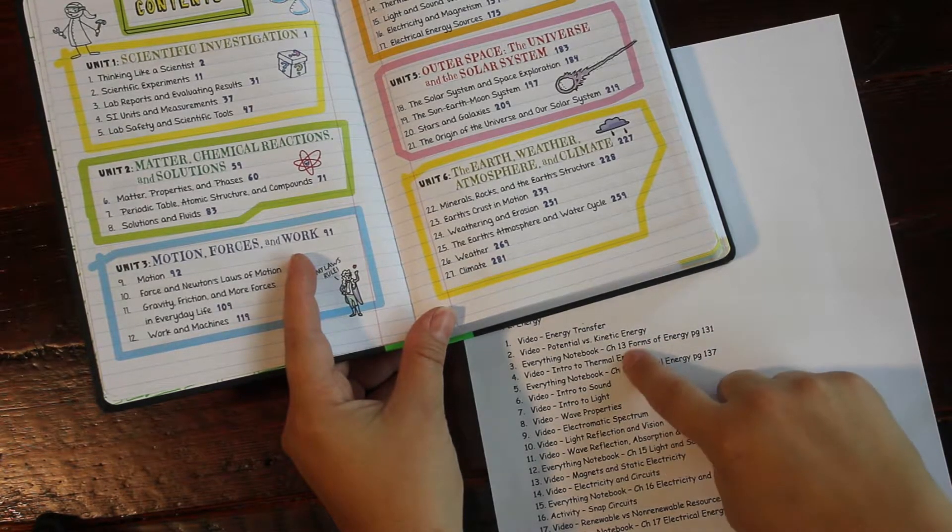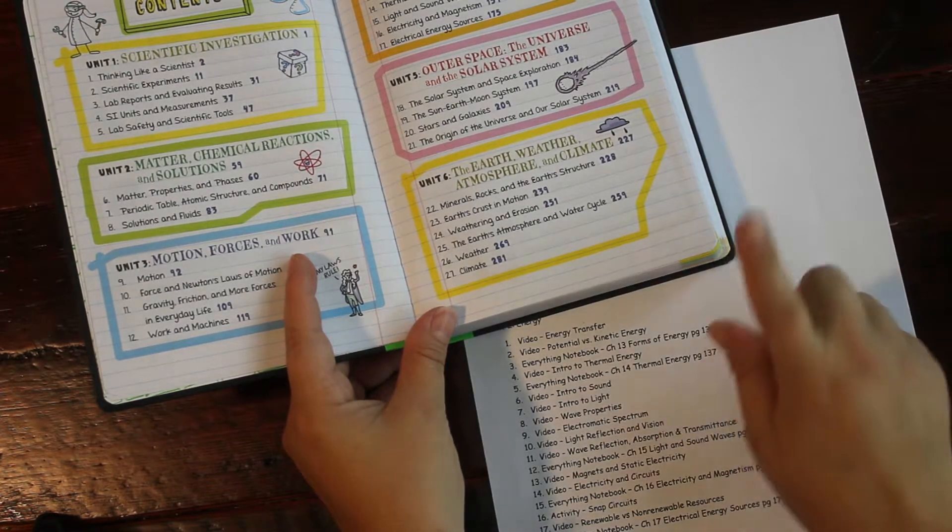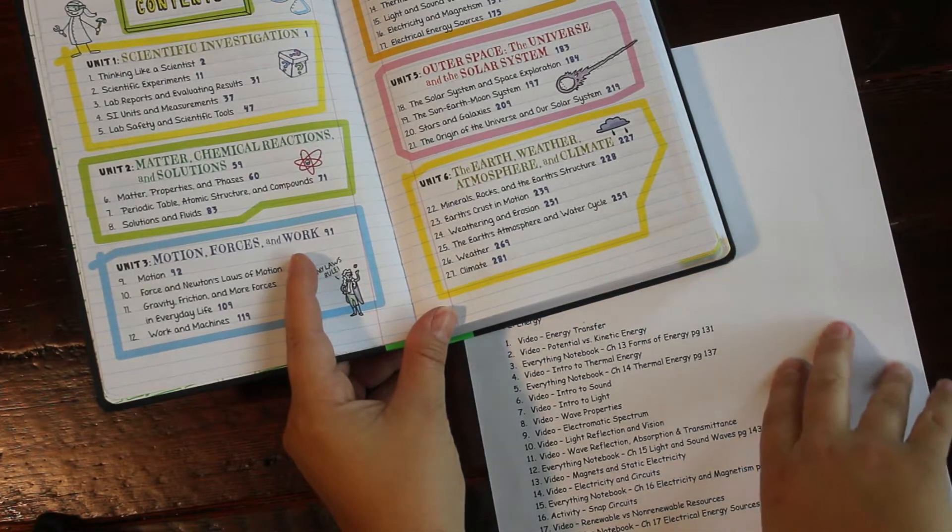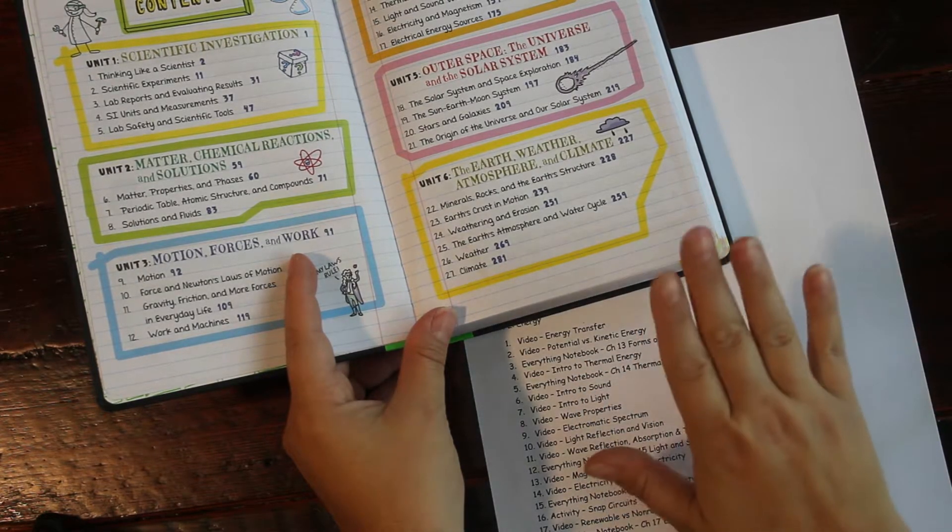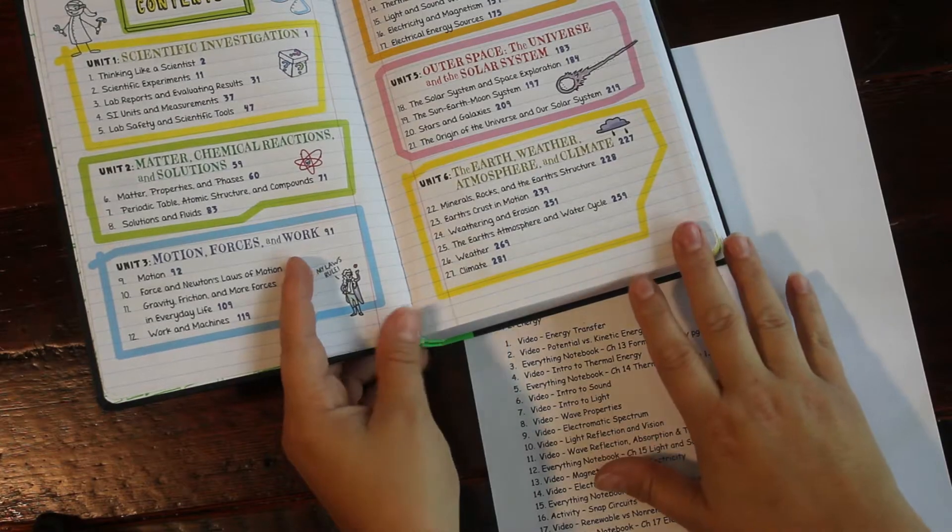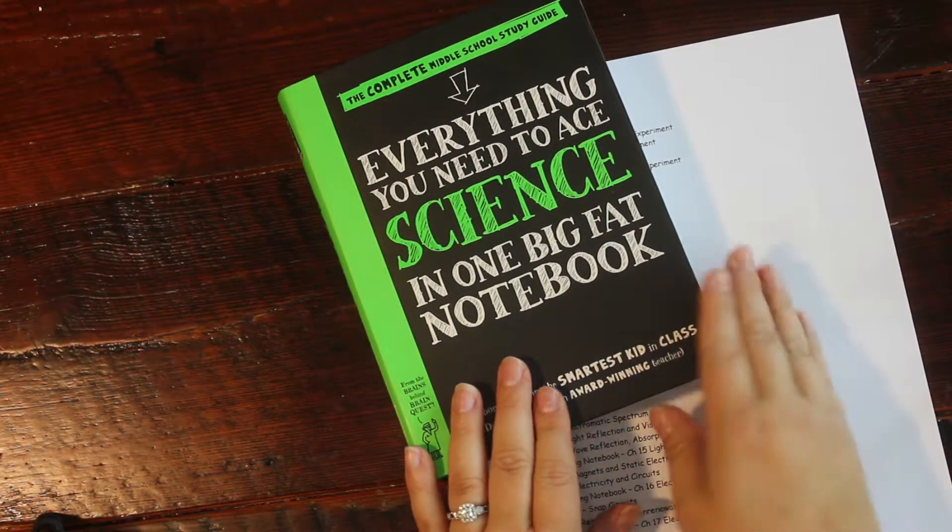As you can see, there were a lot of videos. So we did a lot of videos and then we covered the chapter and the everything notebook. So this is basically just what we're doing the whole time. Find the videos that correspond and then do the chapter inside the everything notebook. This has been working really well so far. We really like it.